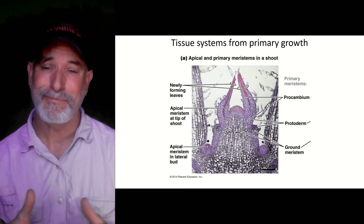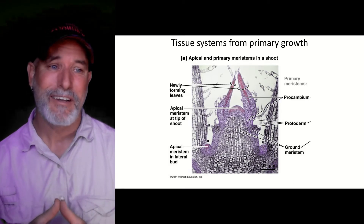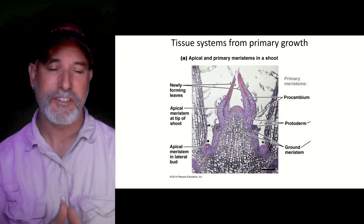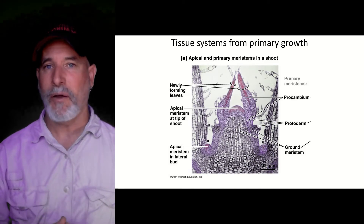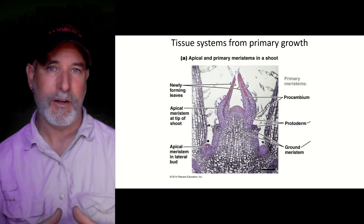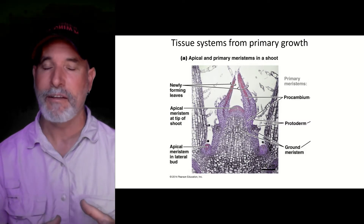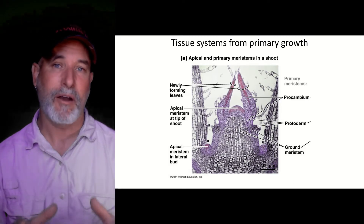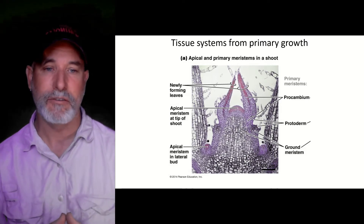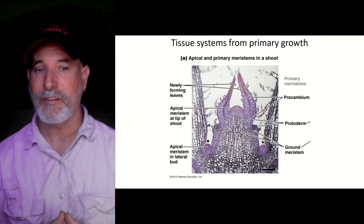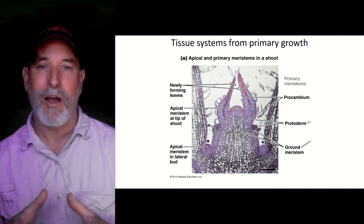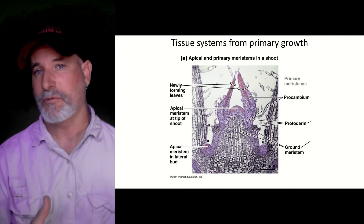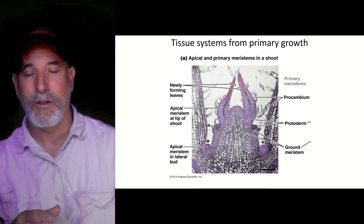This is one of the most widely seen images in plant textbooks — it's used everywhere. It shows primary growth from a stem. At the very tip you've got your apical meristem growing and dividing by mitosis, giving rise to three types of meristematic tissue: you've got the newly forming leaves, the ground meristem, and the cambium, which is going to differentiate into both the xylem and the phloem.